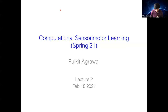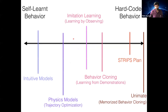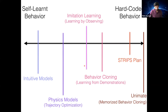Welcome to lecture two. In the last lecture, we were looking at different approaches for control. We started all the way on the right with a technique of memorizing and repeating, then walked through behavioral cloning, some physics models to do trajectory optimization, and end-to-end learning.